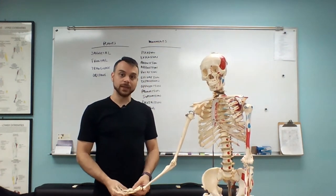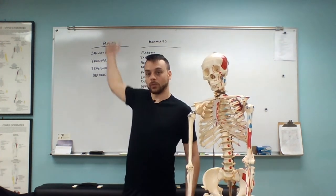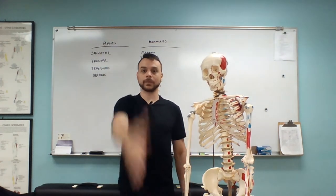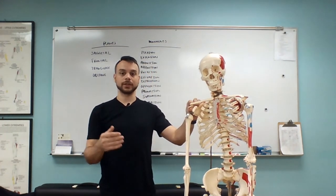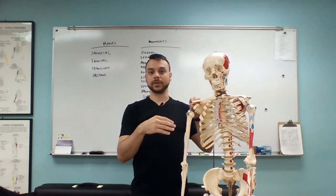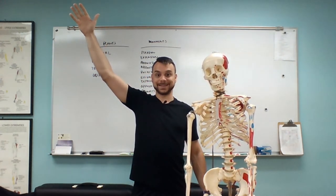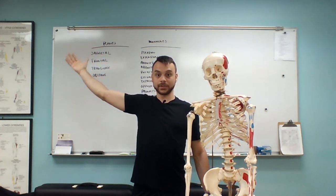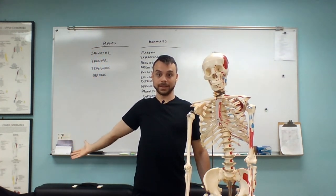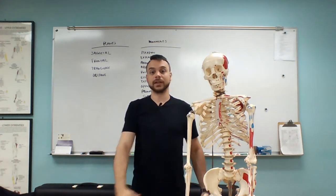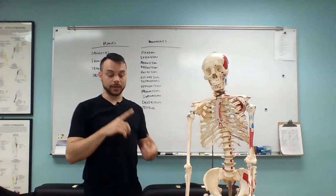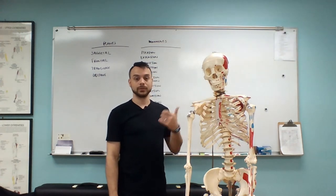Some joints are able to make circular movements. For instance, the shoulder — we can wind it around like a windmill. We call that circumduction. But circumduction is just a cumulation of all these other different movements: we have flexion, abduction, extension, external rotation, then adduction, internal rotation, and back to flexion. So it's just an accumulation of flexion, extension, adduction, abduction, and rotation all occurring together to create that circular movement.